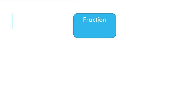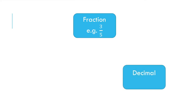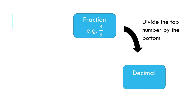I like to use this diagram to help me convert between fractions, decimals and percentages, so I'll explain it to you. If we want to go from a fraction to a decimal, for example 3 over 5, what we need to do is divide the top number by the bottom number. In this example, I need to do 3 divided by 5, and this will get me 0.6. So, to go from a fraction to a decimal, I divide the top by the bottom.